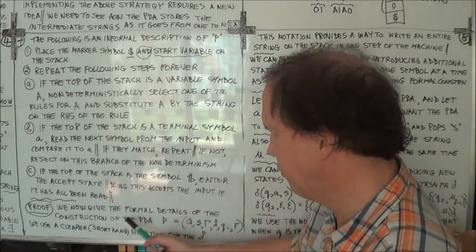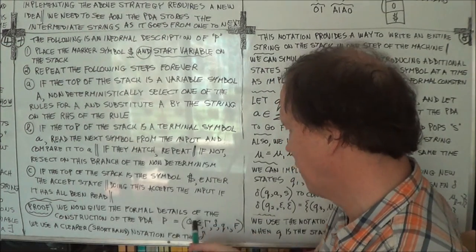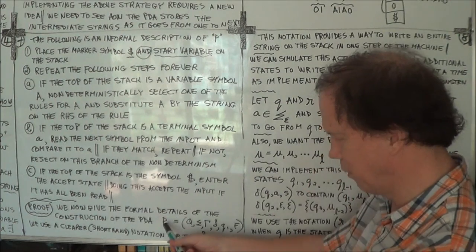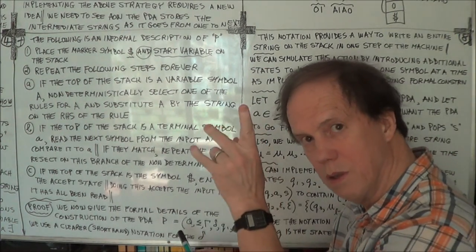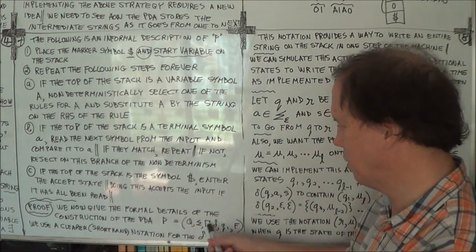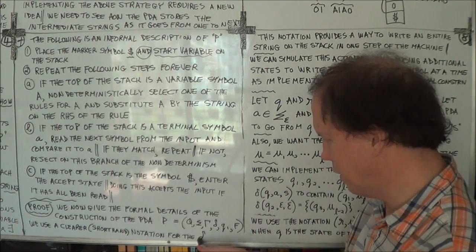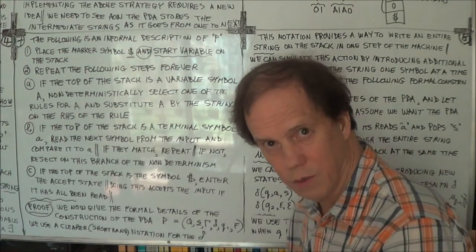Okay, now the formal proof. So that's all proofs. Here's our six tuple as usual for our PDA. Now remember it's a non-deterministic PDA. So the usual six symbols. But we're going to make a modification for the delta.